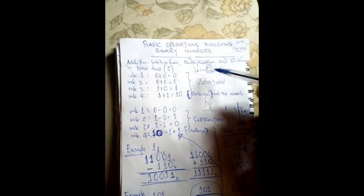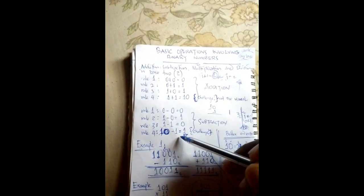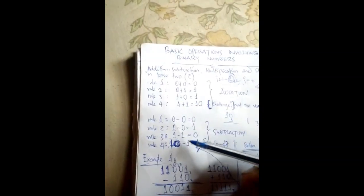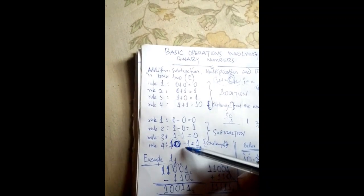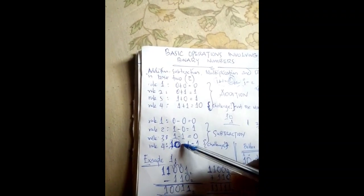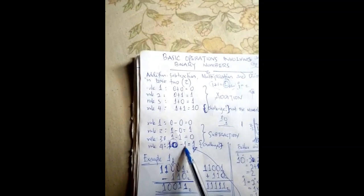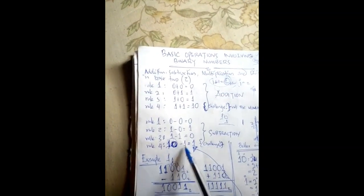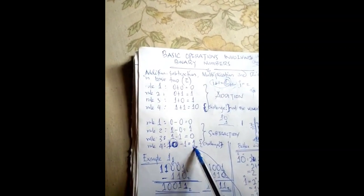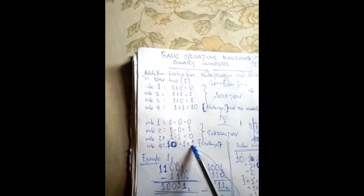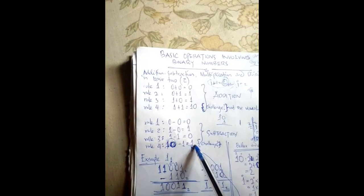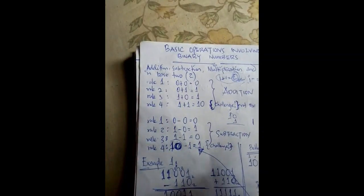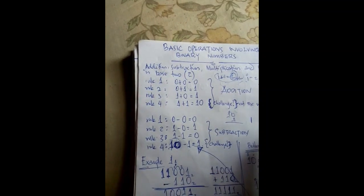So 'ten' in base two is now the representation of two. The same thing with 'ten minus one will give you one' — this 'ten' when you convert it to base two represents two in base two, and 'one' is one in base two. So two minus one will give you one. That's how we work.